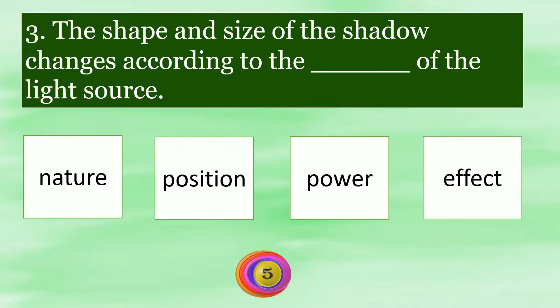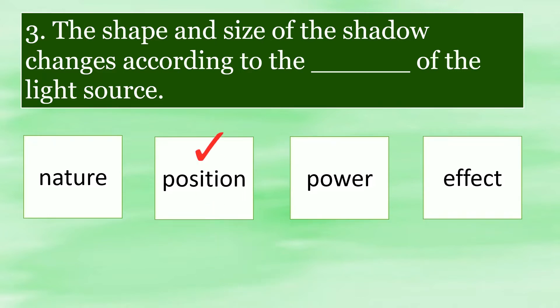The shape and size of the shadow changes according to the position of the light source.